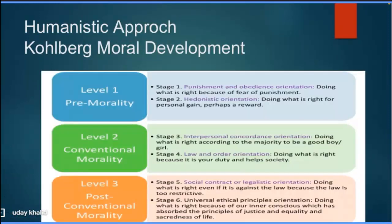Moral development is also a humanistic approach that explains how morality develops. Morality develops across three levels: Level 1 — pre-morality; Level 2 — conventional morality; Level 3 — post-conventional morality. There are six stages. The first is punishment and obedience orientation — I do what is right if it does not bring punishment.